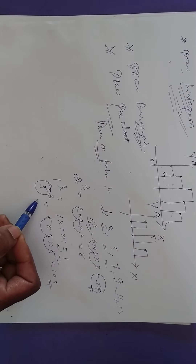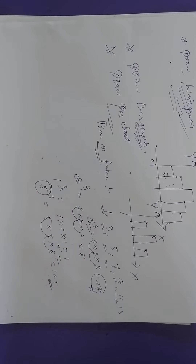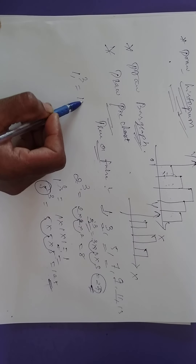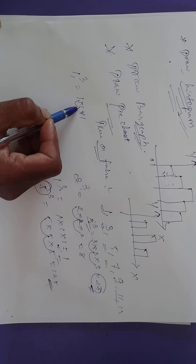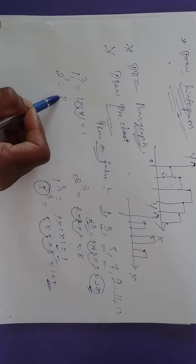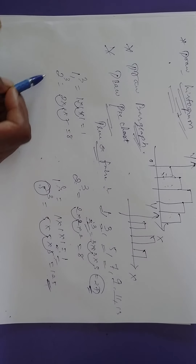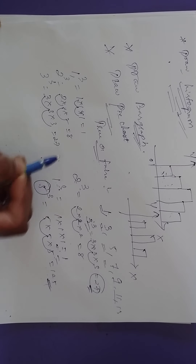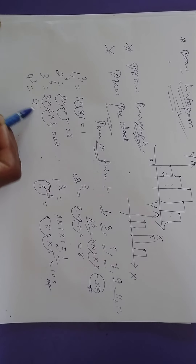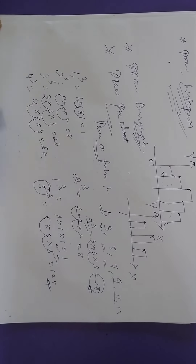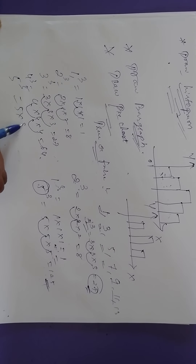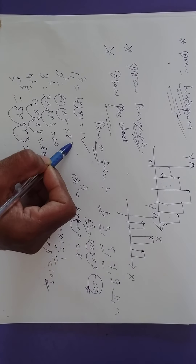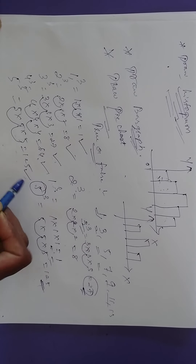When you take the cube of any odd number, we get one more odd number, not an even number. The perfect cubes: 1 cubed is 1, 2 cubed is 8, 3 cubed is 27, 4 cubed is 64, 5 cubed is 125. So the perfect cubes are 1, 8, 27, 64, 125, and so on.